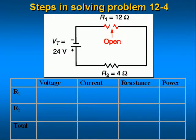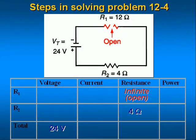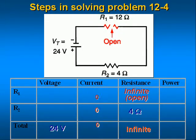This is a series circuit containing a 24 volt source and two resistors R1 and R2 in series. R2 is good and its value is 4 ohms. R1 is open so its resistance is infinity. The total resistance in this circuit is infinite. Current equals voltage divided by resistance, so 24 volts divided by infinity equals a current of 0 amps, and since this is a series circuit the current is zero through all of the resistors as well.